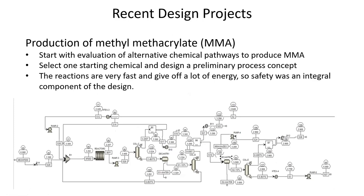Another recent design is one to make methyl methacrylate, which is used for producing plastics — very hard, high-strength plastics that are also components in paint. In this case, we were looking at different options for the chemical pathways to make the desired product. We evaluated five different chemical routes, all starting with a different original feed material, including things like linear butanol, a branched butanol molecule, and a C3 compound.